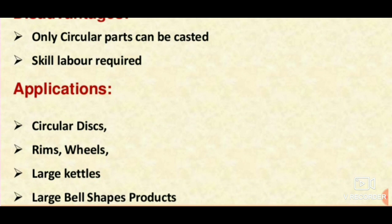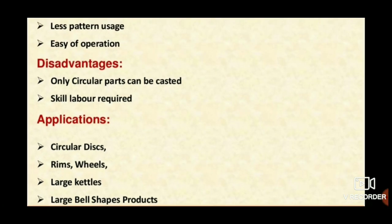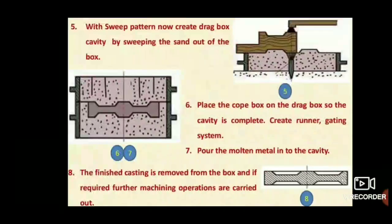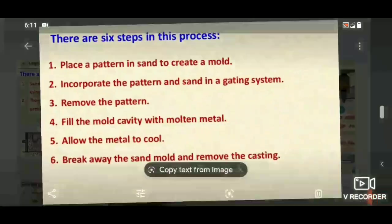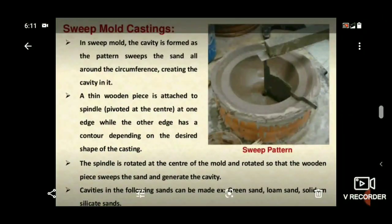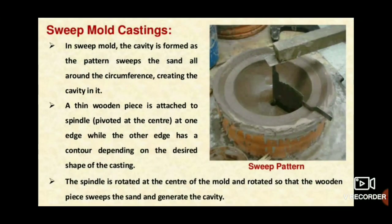Applications include circular discs, rims, and wheels — all cylindrical, spherical, or circular shapes. Any cast metal with a circular or cylindrical shape can be made using sweep casting.